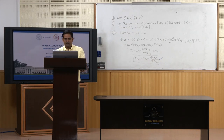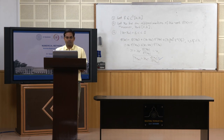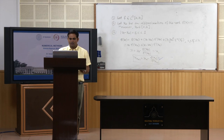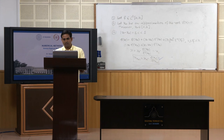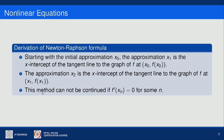So we start with an initial approximation x₀, then find x₁ which is the x-intercept of the tangent line to the graph of f at (x₀, f(x₀)). This method continues in this way for finding the approximate numerical solution x*, towards which the sequence is going to converge.